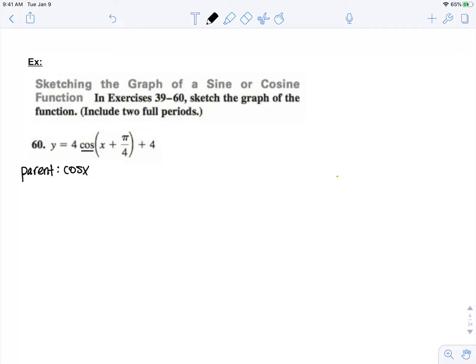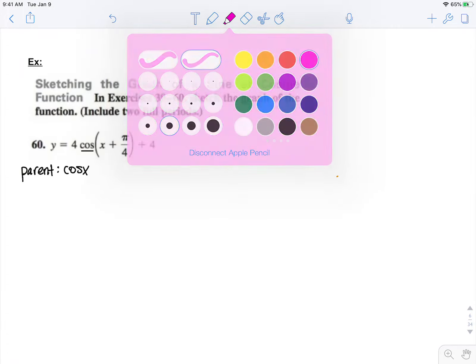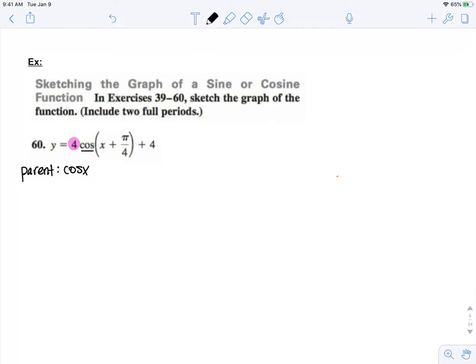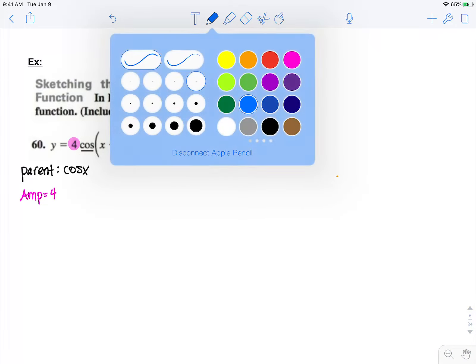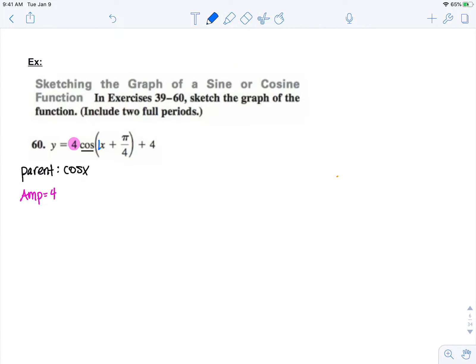Now we're going to look for the transformations. First, this 4 in front means that our amplitude is 4. I look in front of my x, and it technically has a coefficient of 1, so my period is 2 pi over 1, which is 2 pi.